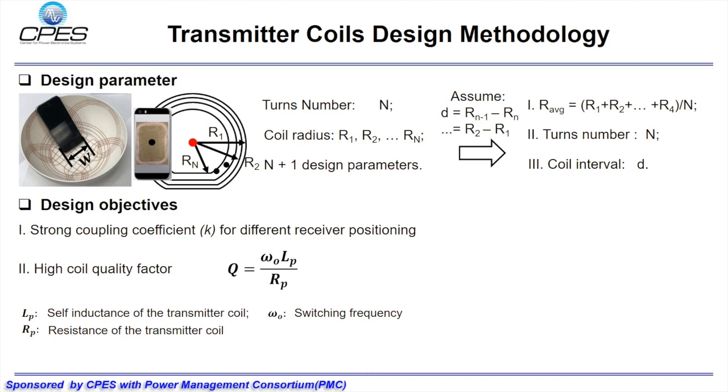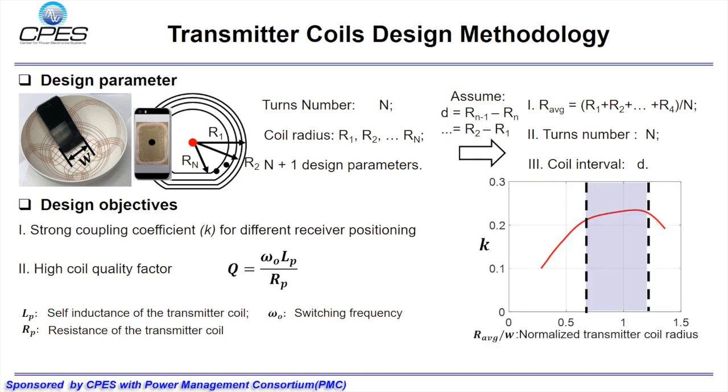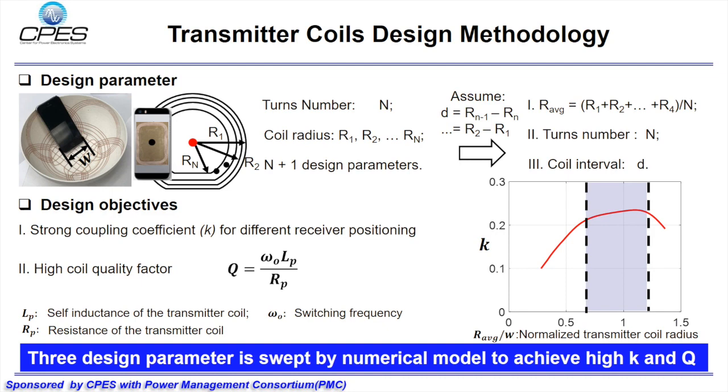Then we built a numeric model to calculate the coupling coefficient k and the coil quality factor q. With the numeric model, we swept the design parameters to achieve both high k and q. Here, the coupling coefficient versus the coil average radius is shown as this red curve. As you can see, the coil radius must be high enough to cover the receiver coil and get high k. The detailed sweeping process of each parameter you can refer to our published paper.